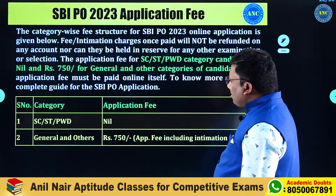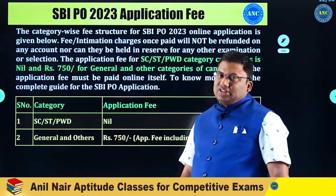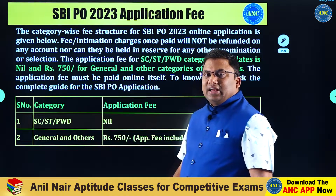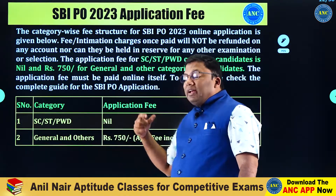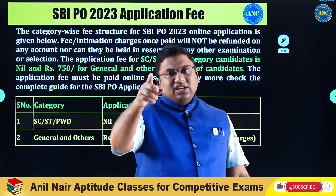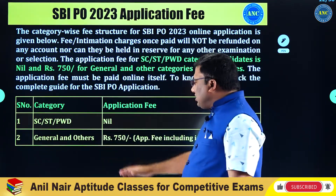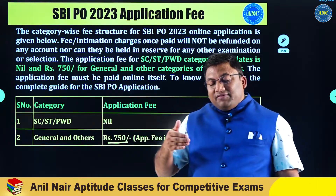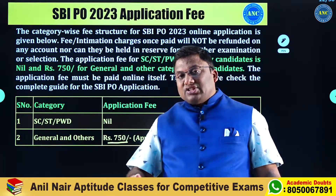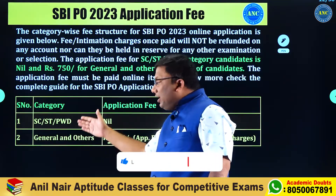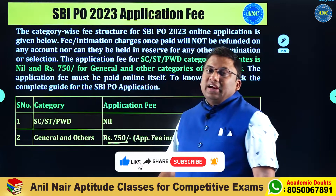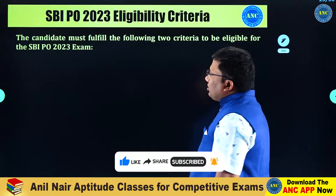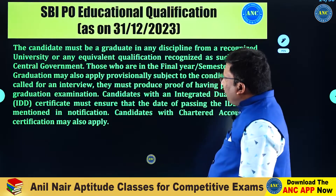What is the application fee? If you are from the general category, SC, ST, and PWD category, what is the application fee to write the prelims examination? It is zero for you. Other than these categories, it is 750 rupees. 750 rupees is the application fee for students in that category. For SC, ST, and PWD, it is absolutely free.